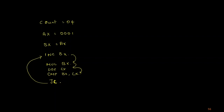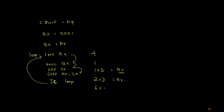Whenever carry exists, it jumps back to the loop location. So starting with AX = 0001, then multiplied by BX = 2 gives AX = 2. Then BX increments to 3, so 2 × 3 = 6 stored in AX. Then 6 × 4 = 24 stored in AX. So AX holds 2, then 6, then 24.